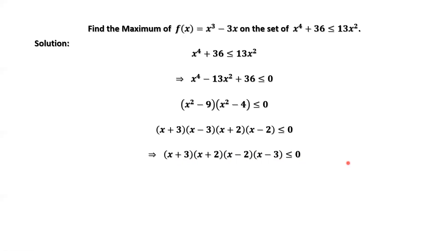The next question is how to check in which interval the left-hand side is less than or equal to 0. The general result is that the left-hand side keeps the same sign in each subinterval. Therefore, we only need to pick a test value in each subinterval and plug it into the left-hand side to test whether it is negative or equal to 0.